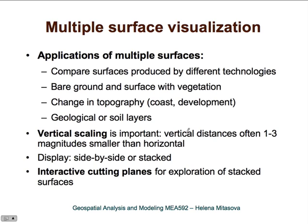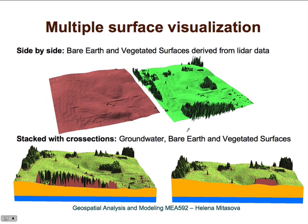In geospatial applications, vertical scaling is important. For example, you might be analyzing soils in a 500 square meter or one square kilometer area, but the soils really change within one meter. So you would use perhaps five meter resolution horizontally, but you may need centimeter resolution in the vertical direction. Let's look at some examples.